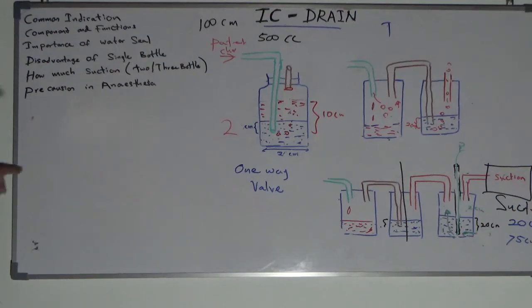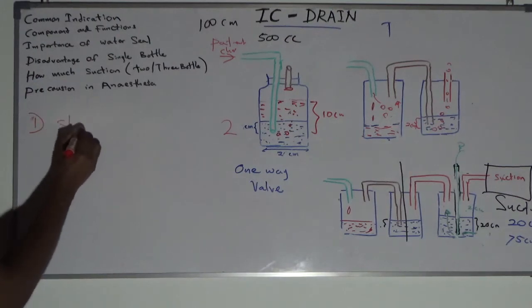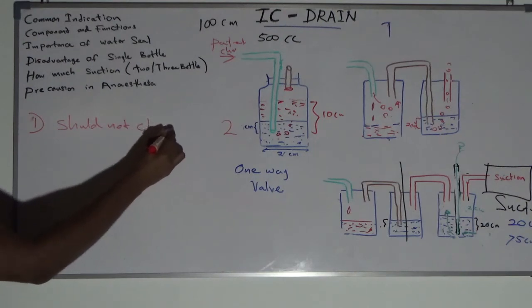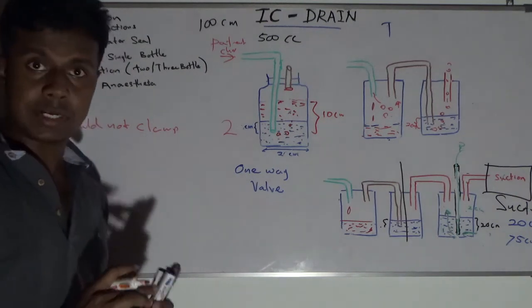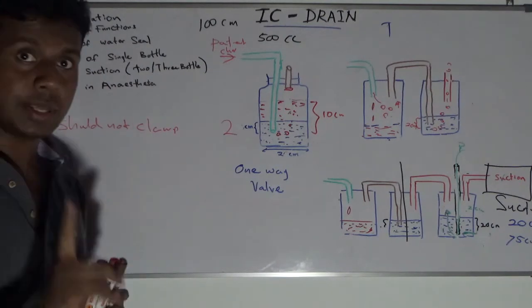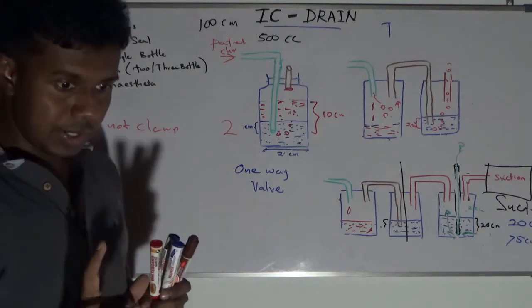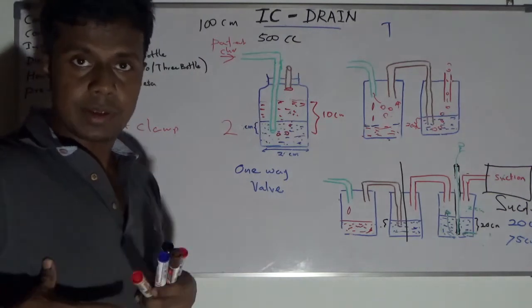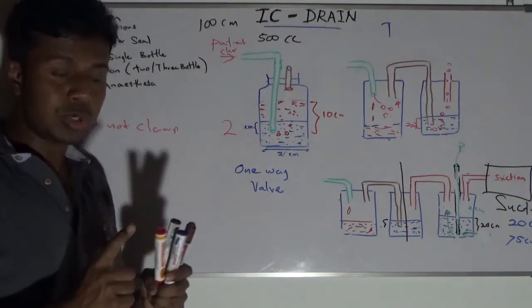Number one concept: you should not clamp the IC tube — especially a draining IC tube should not be clamped. If you are going to give positive pressure ventilation to a patient with an IC tube, the IC tube should not be clamped. Number two concept: the draining of intercostal fluid should be done cautiously and in a controlled fashion.